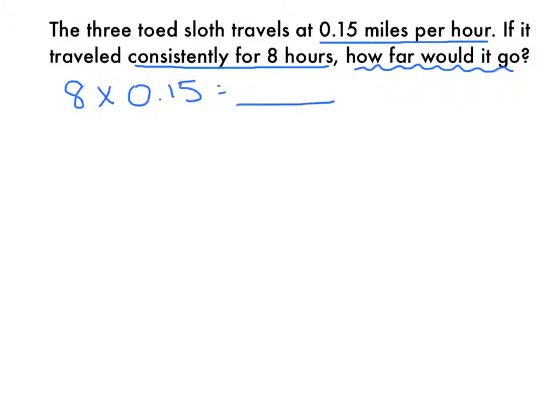So this problem is finding out eight groups of 0.15. I'm using this strategy, so I'm going to think about these as whole numbers, which means I'm going to multiply 15 times 8. I'm going to use partial products. 10 times 8 is 80, and 5 times 8 is 40. If I add those two products together, I get 120.